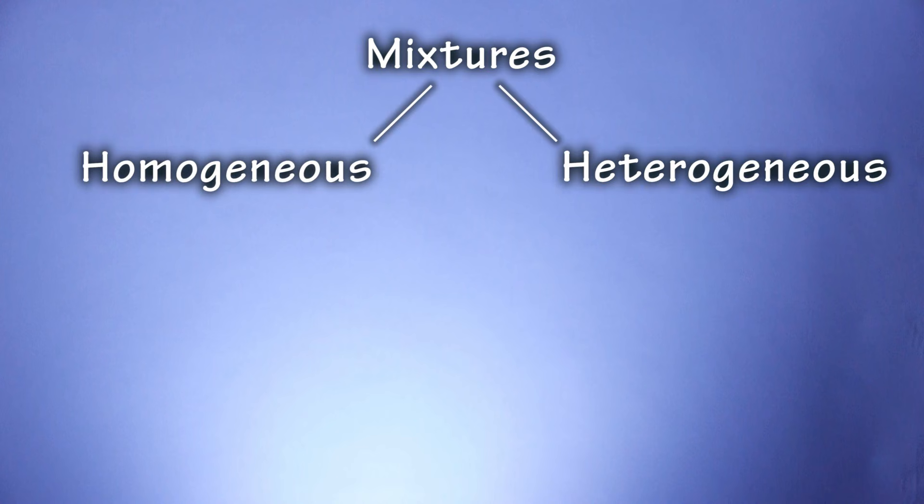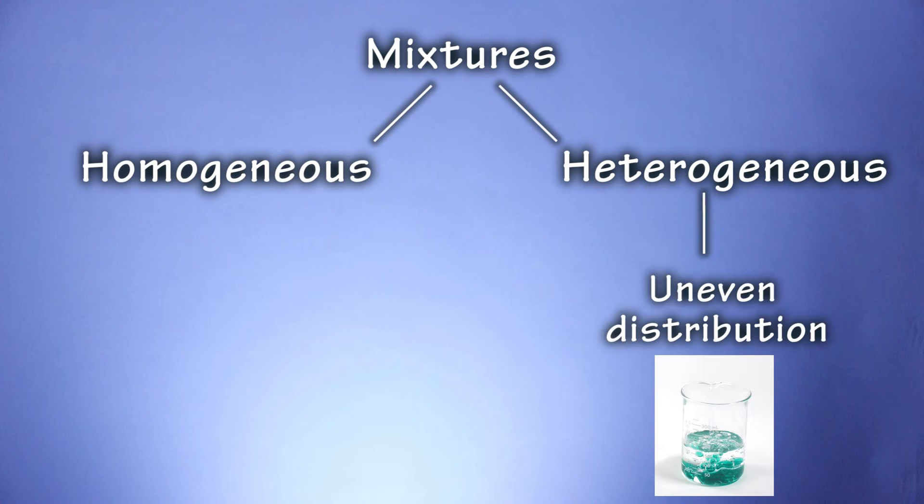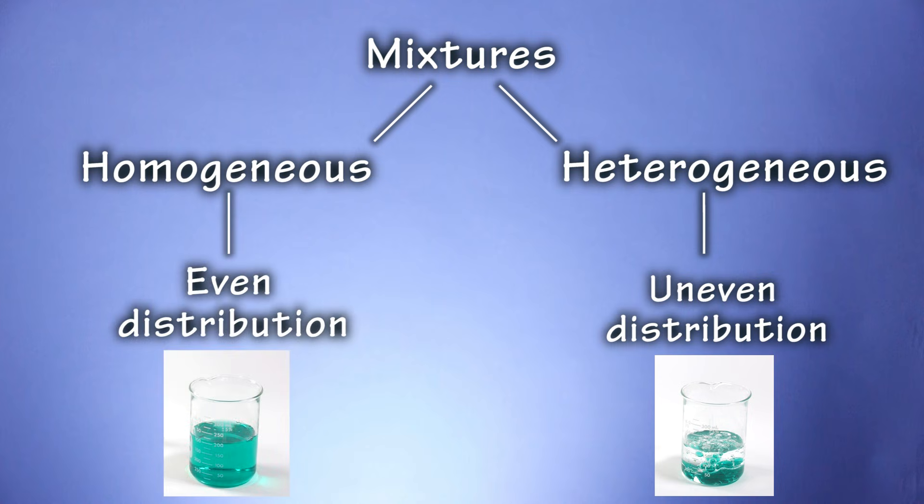Mixtures can be heterogeneous or homogeneous. The components in heterogeneous mixtures are unevenly distributed, whereas homogeneous mixtures are evenly distributed. So now you know.